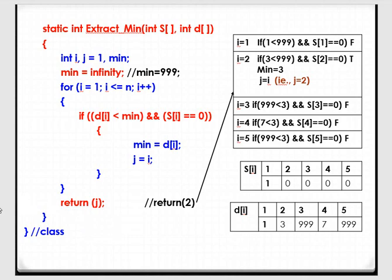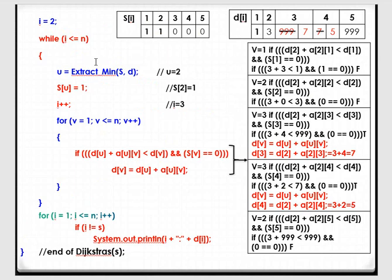When the function returns, the control goes back to the Dijkstra function with return value 2. That 2 is assigned to variable U. In the visited array, S[U] — that is S[2] — is set to 1, because from vertex 1 we have reached vertex 2. I is incremented to 3. Now the new vertex 2 has been visited, so from vertex 2, we need to check: is it possible to reach other vertices 3, 4, 5 with less cost?